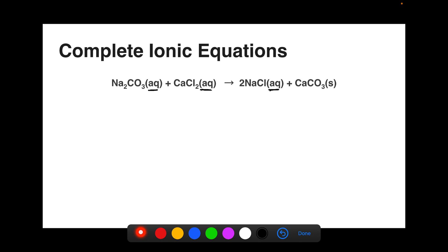So in reality, when we say Na2CO3 aqueous, what we really have here is two sodium ions and a carbonate ion. Likewise, CaCl2 is actually a calcium ion and two chloride ions. In the products, two NaCls are actually two Na pluses and two Cl minuses. Now because our calcium carbonate is a solid, it does not dissociate. Therefore, we do not break it up into its constituent ions.